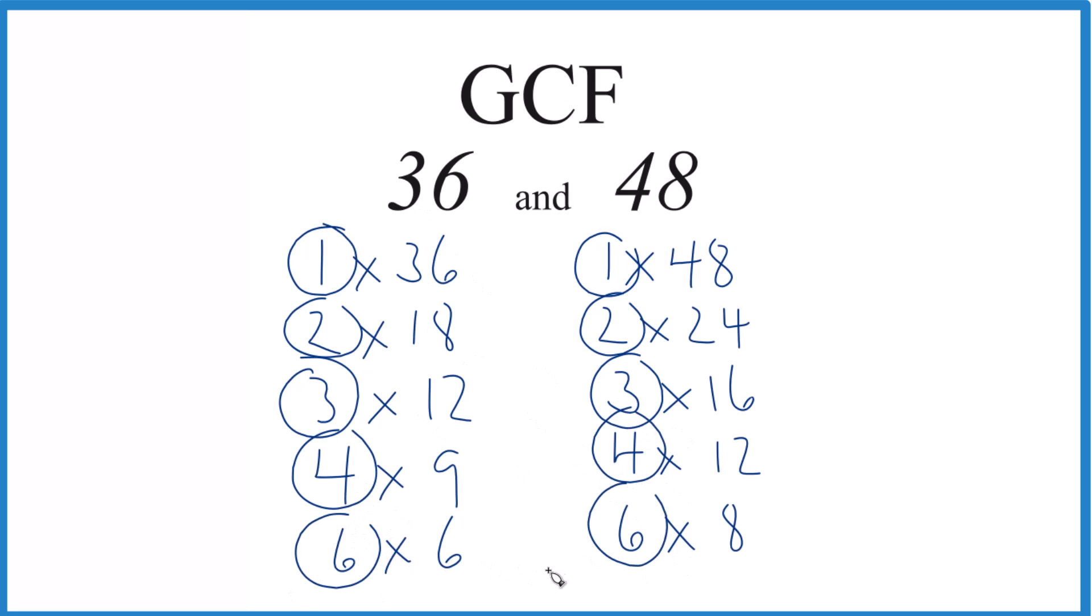Is there anything greater than 6? It looks like 12 here. Well, that's the greatest number that goes into 36 and 48 evenly, and that makes 12 the greatest common factor for 36 and 48.